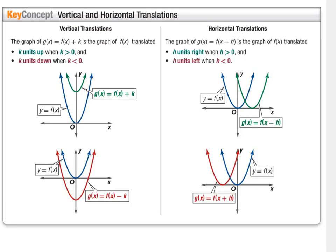Next we're going to look at all the different transformations we can do to functions. First are vertical translations — when you shift the function up or down. That's when you see a function plus a number or a function minus a number. When the number is positive, you shift that many spaces up; when negative, you shift that many spaces down.